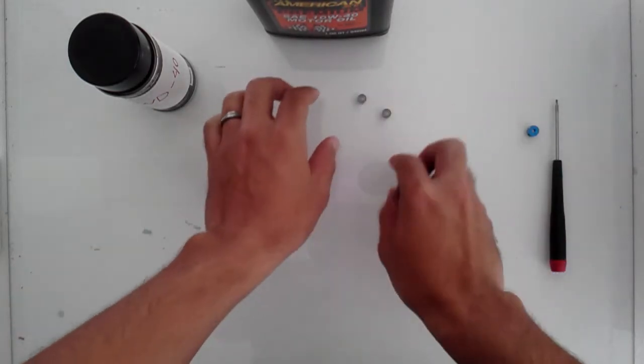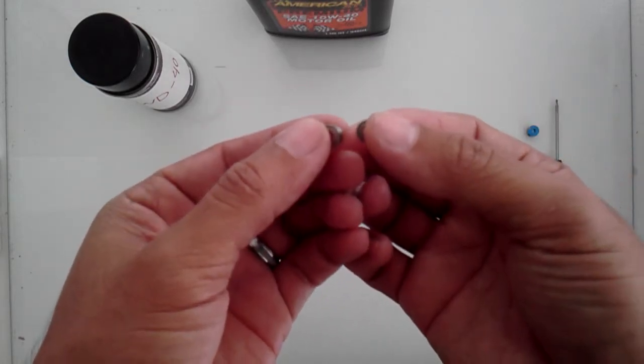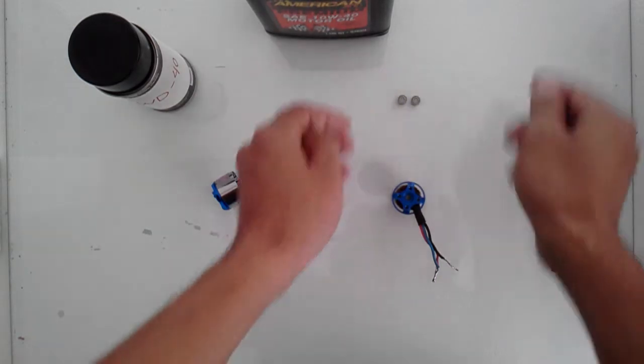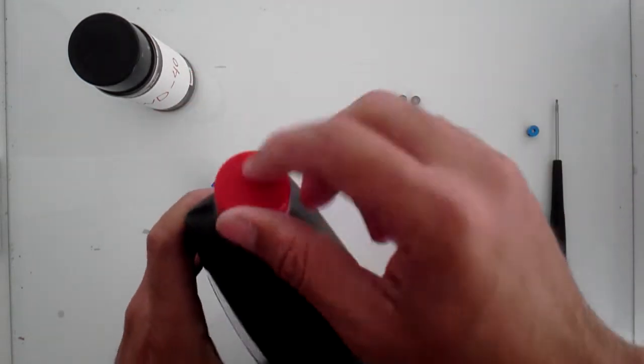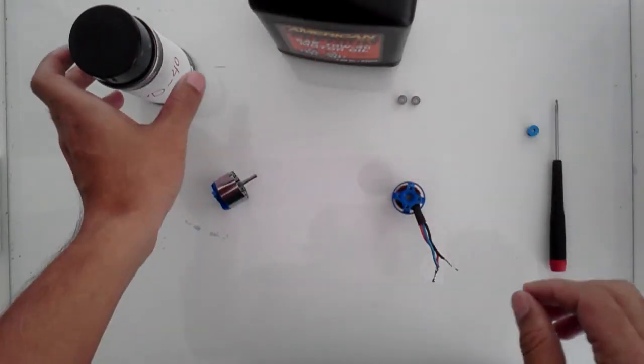Alright. Now what I do with these two bearings is I soak them in the motor oil for about 10-15 minutes. Just take a capful of motor oil and put the bearings in there.